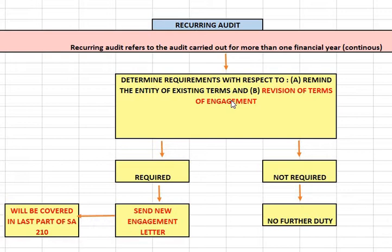Firstly, the auditor CA-A, when he audited A. Limited in 2018-19 — the last year — would have done it on the basis of some existing terms of engagement. So the auditor has to remind the entity or the client of these existing terms which were in place at the end of the 2018-19 financial year. This is the first requirement: remind the entity of existing terms.